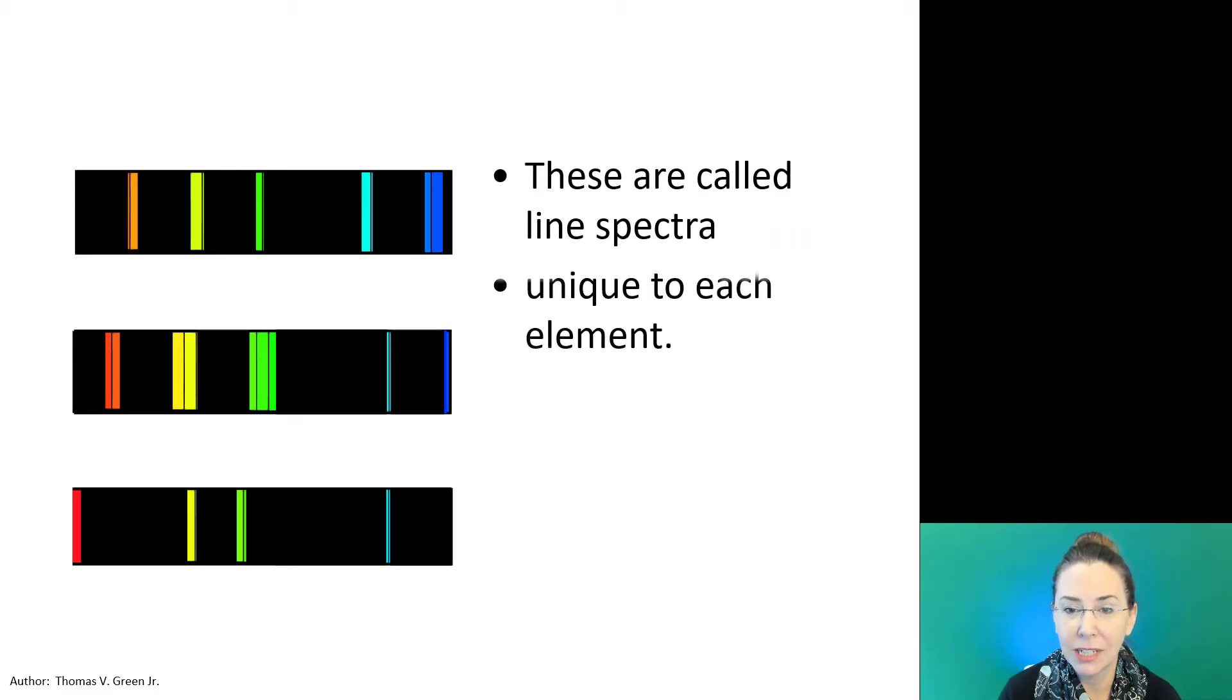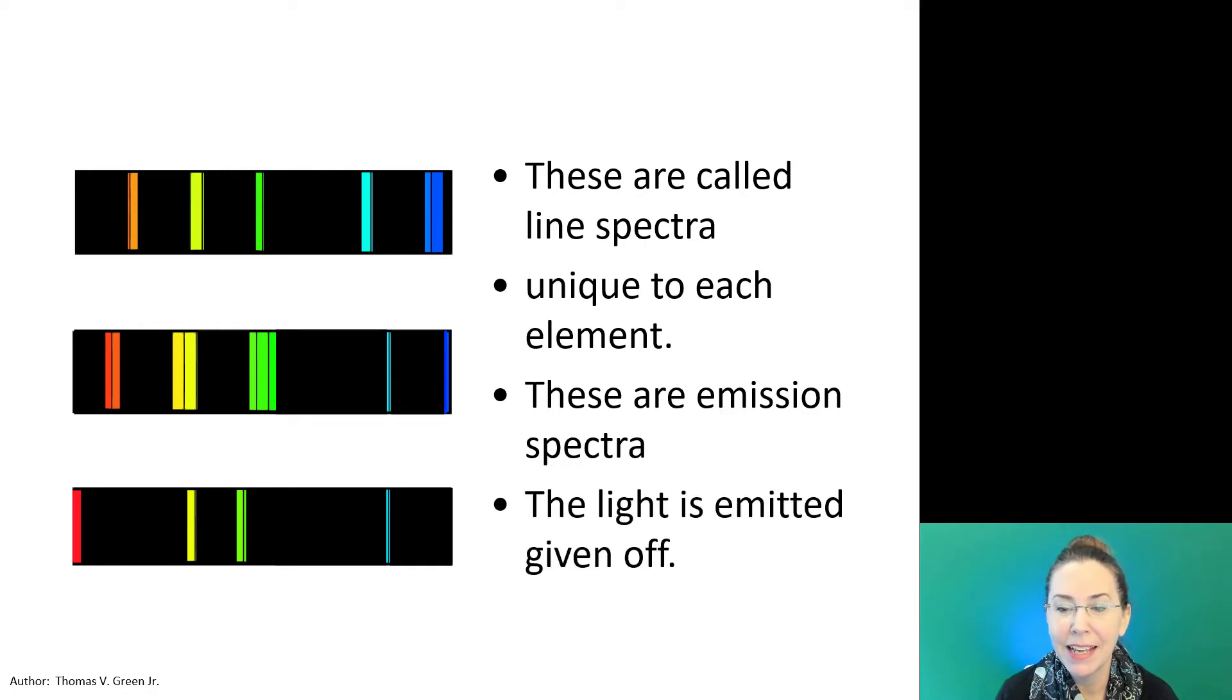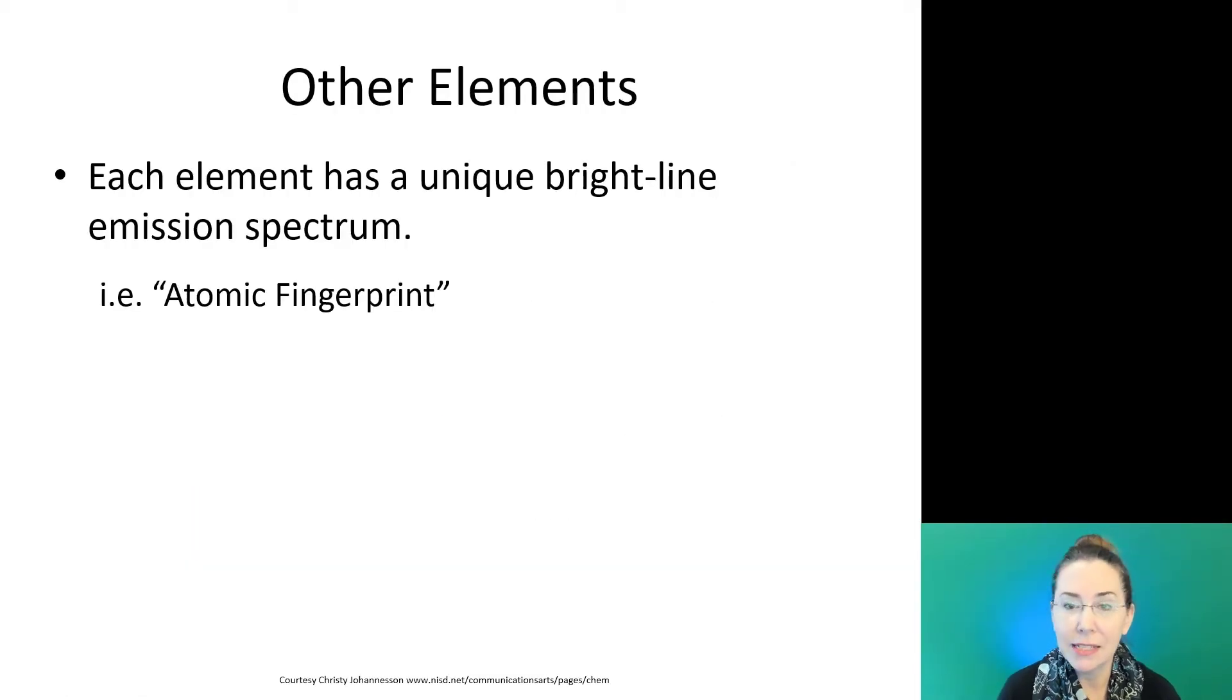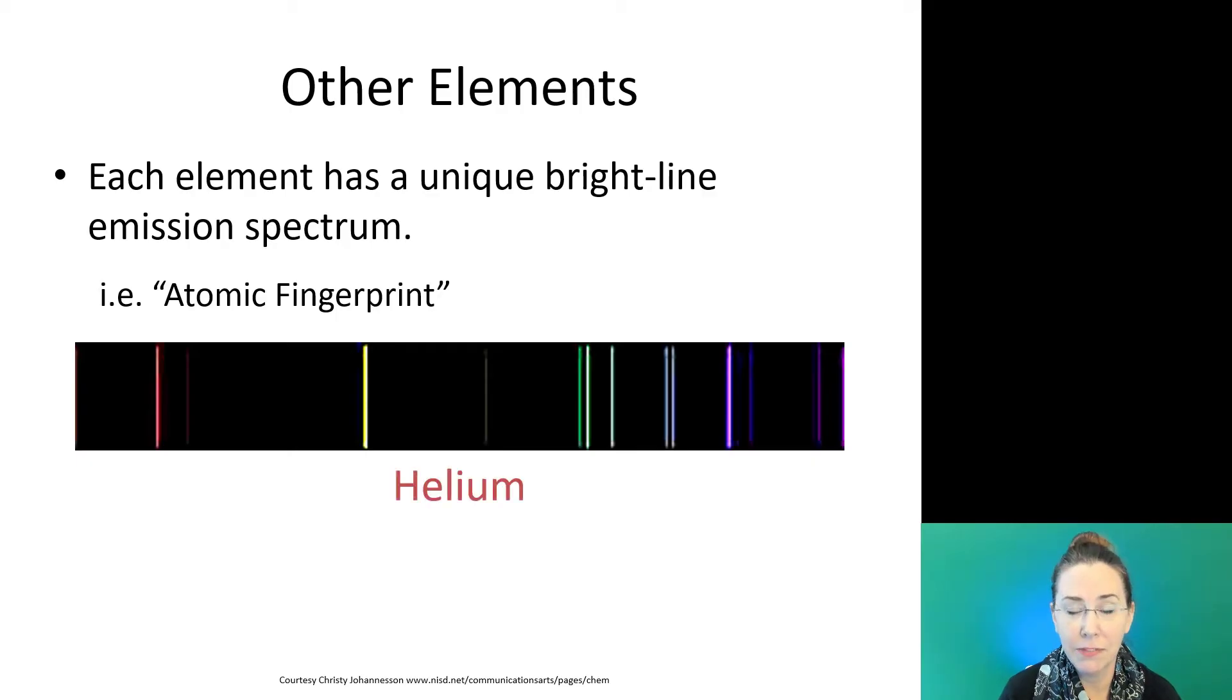These are called line spectra. They're absolutely unique to each element. They are sometimes also called emission spectra, and the light is emitted or given off during emission spectra.